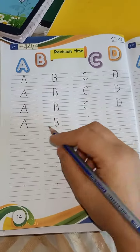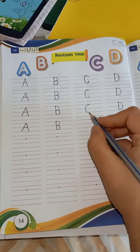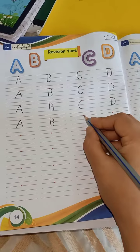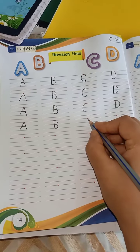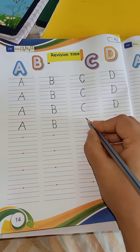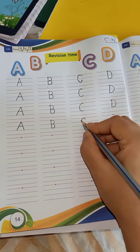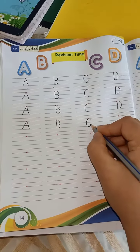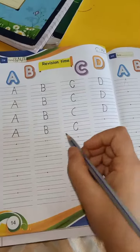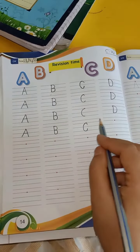Now write down, what comes after B? A-B-C. So write down here letter C. So how to write letter C? Make a curve from capital line to base line. A-B-C.